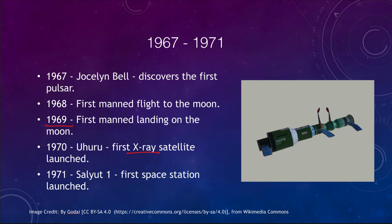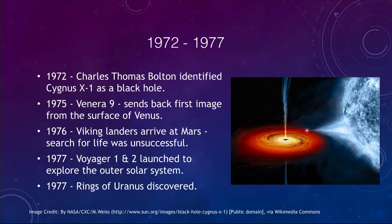Throughout the rest of the 70s, in 1972, Charles Thomas Bolton identified Cygnus X-1 as a strong black hole candidate. Measurements based on the orbit showed that the mass of the object at the center of the accretion disk had to be too massive to be anything but a black hole.